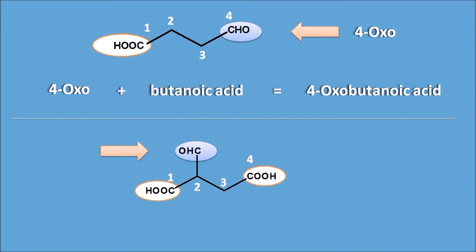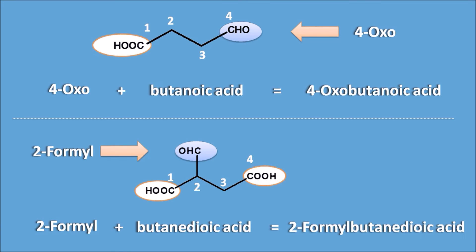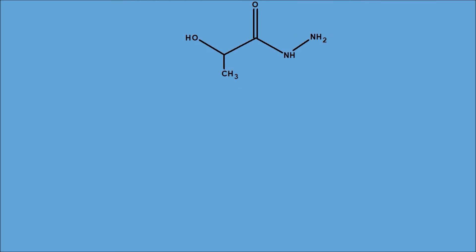The aldehyde is present as a side chain, so it is denoted by the prefix 'formyl'. Note that the aldehyde has two possible prefixes: 'oxo' is used when the aldehyde carbon is involved in the parent chain, and 'formyl' is used when the aldehyde carbon is outside the parent chain. In this case the aldehyde carbon is not in the parent chain, so it is indicated as '2-formyl'. The complete name is 2-formylbutanedioic acid.